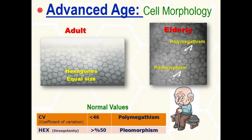Cell morphology: the normal endothelial cells are hexagonal in shape and are of uniform size. This gives the best geometrical fitting to the curvature of the posterior corneal surface, yielding an efficient barrier. Long-term morphological changes of the endothelium include polymegethism — variation in cell size, typically expressed as coefficient of variation — and polymorphism — variation in cell shape, typically expressed as percentage of hexagonal cells.